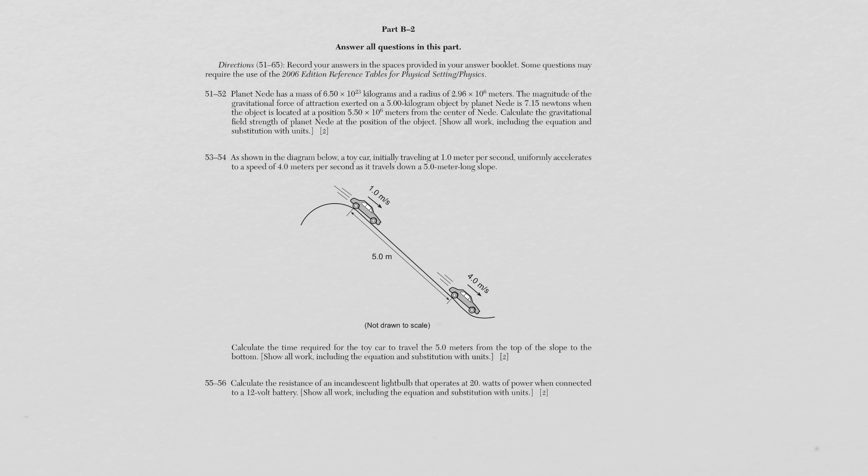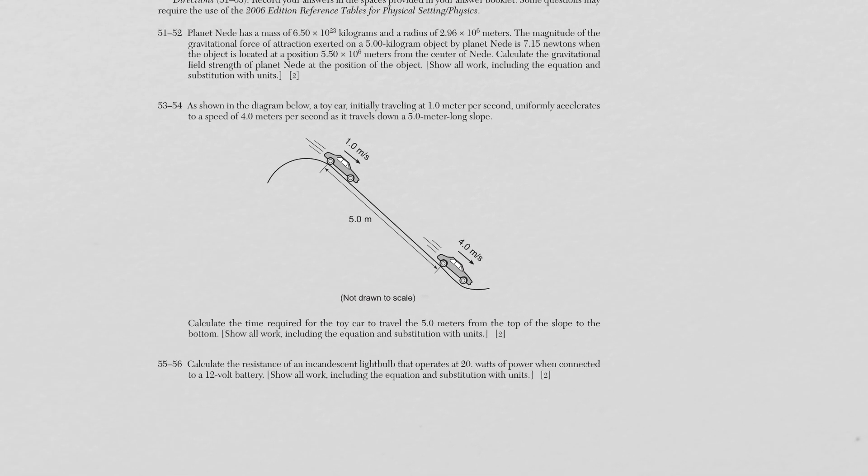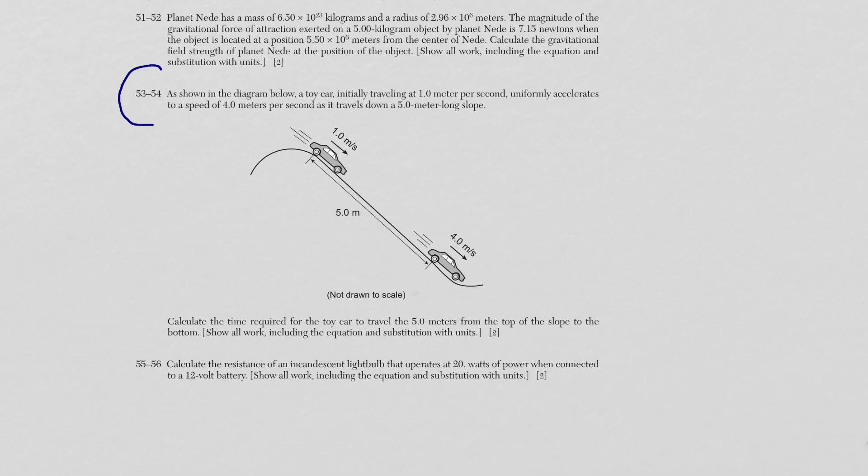The short answer section requires showing all work. Anytime you calculate an answer, write down the equation, plug in numbers with units, and provide an answer with units — otherwise you won't receive full credit. These questions are typically worth two points each, so practice exactly how you would on the test.